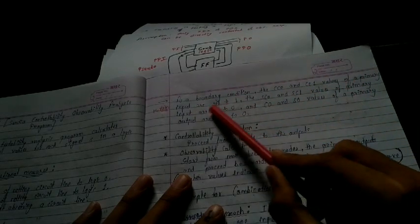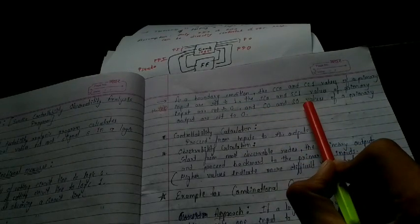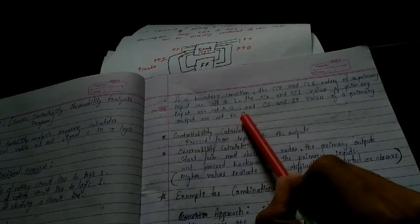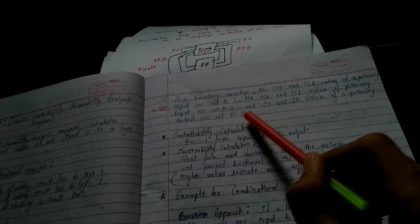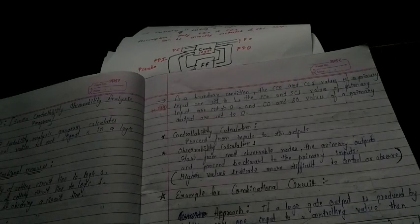Controllability values range from 1 to infinity and observability from 0 to infinity. As boundary conditions, CC0 and CC1 of primary inputs are initialized to 1, while SC0 and SC1 of primary inputs are set to 0. Both combinational and sequential observability of primary outputs are set to 0. In the next lecture, we will calculate controllability and observability for combinational circuits, then move to sequential circuits.